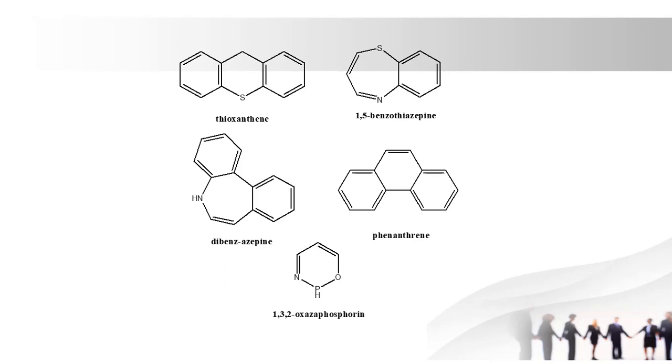Next one is phenanthrene. Phenanthrene also contains 3 phenyl rings, the same as anthracene, but the position of the rings and bonds differ.